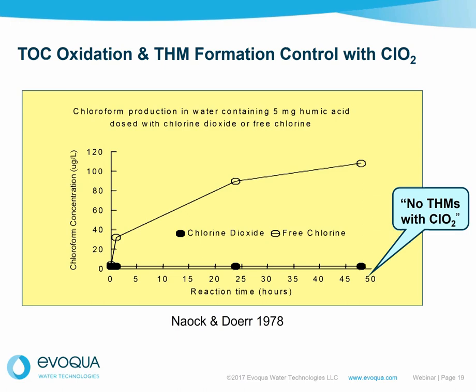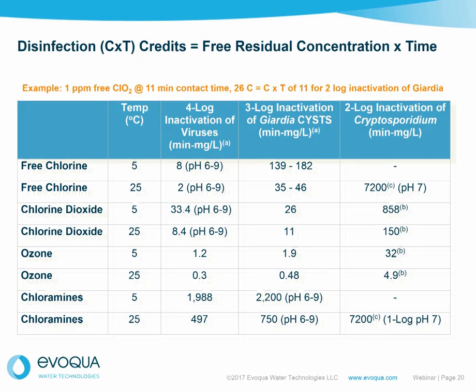This slide sets out to show why a multibarrier approach is necessary. As we look down the list — free chlorine, chlorine dioxide, ozone, and chloramines — and across to the contact time CT required, we can see that free chlorine is relatively effective against viruses, but chloramines are not. For Giardia, chloramines just don't do it. For cryptosporidium, chlorine just doesn't do it. This slide shows well why a multibarrier approach is useful, it illustrates the impact of temperature on the process, and it explains why most treatment plant operators adopt a multibarrier approach.